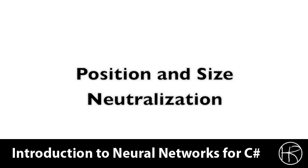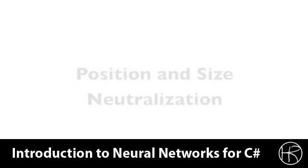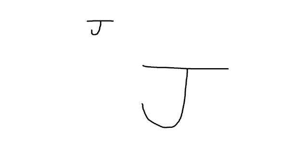This causes the downsampled image to be a consistent resolution and also to not take into account the size of the letter. Let's look at an example of how we would downsample the capital letter J in the Latin alphabet. Here you see two letter J's drawn at different positions and at different sizes. We don't want the fact that you draw a J at different positions or at different sizes to make any difference to the neural network — these are both capital letter J's and need to be treated as such.